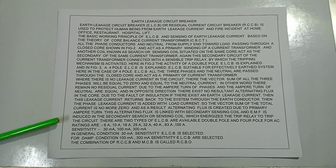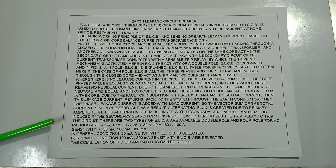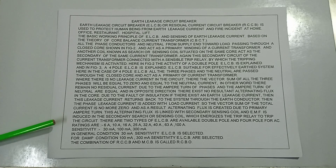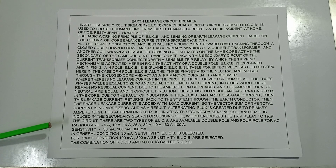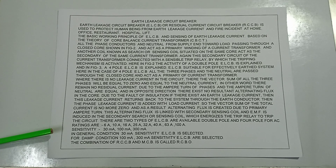There are two types of ELCB available: double pole and four pole, for AC use. Current ratings are 6A, 10A, 16A, 25A, 32A, 40A, 63A, and 100A. Sensitivity ratings are 30 mA, 100 mA, and 300 mA.